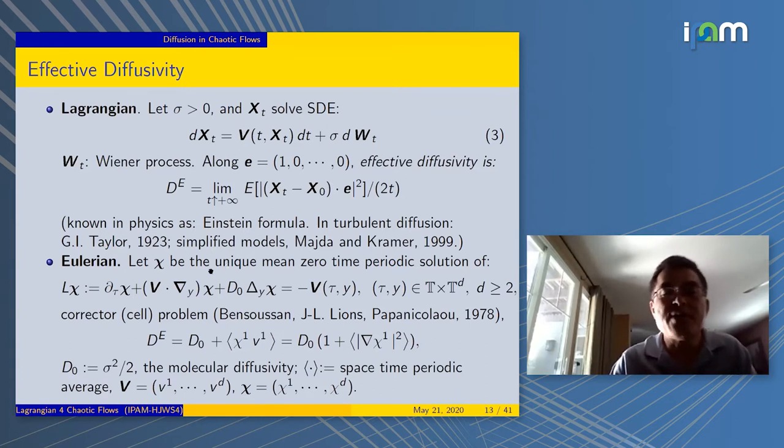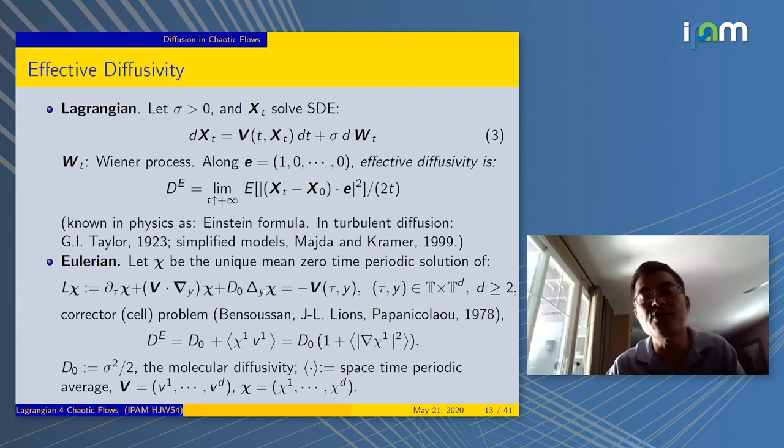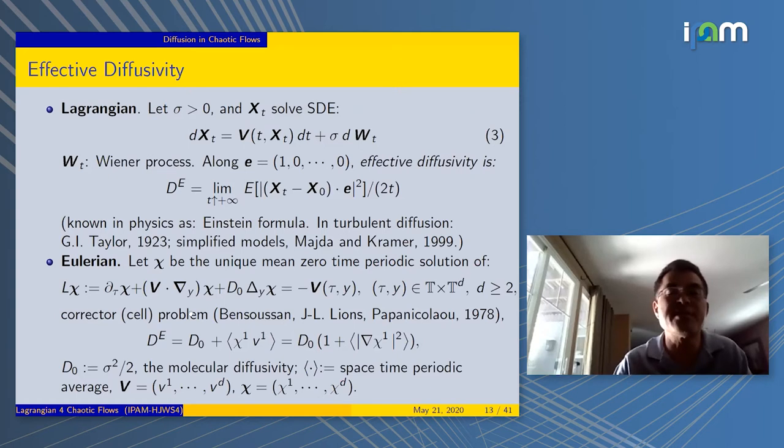The Eulerian approach is the following. You're going to solve a so-called corrector problem. It's a vector diffusion, time-dependent vector diffusion problem with the vector field V on the right-hand side. The solution χ is the so-called corrector. In the periodic case, it's also called cell problem, because the corrector is defined on the periodic cell.